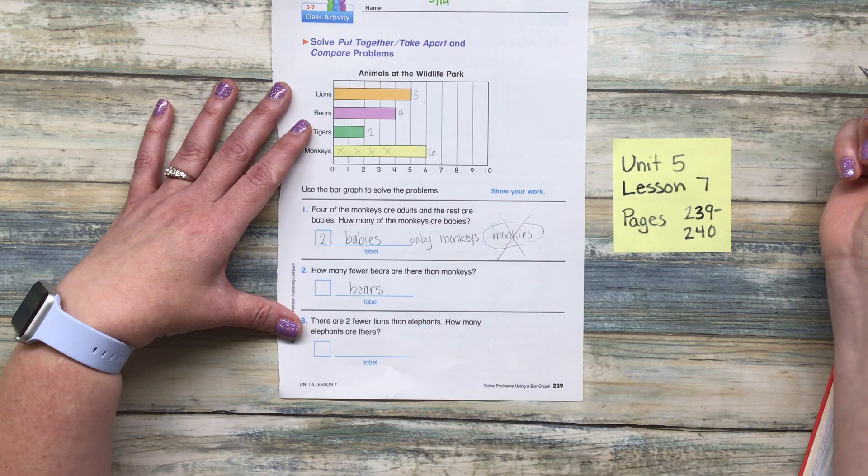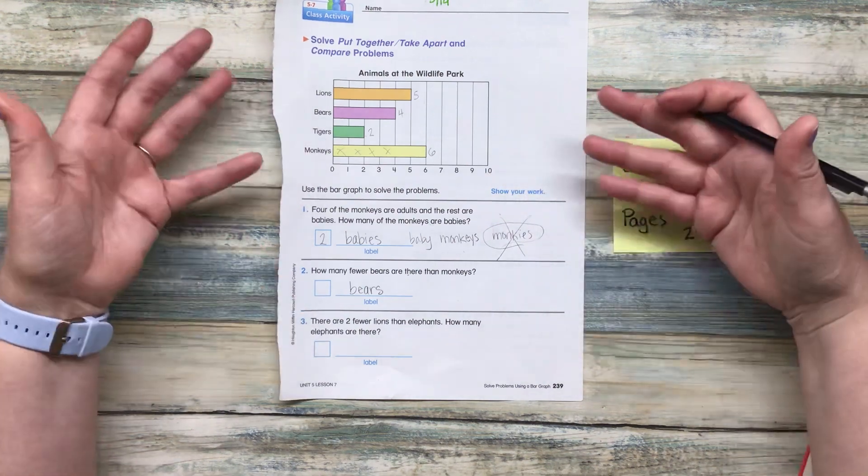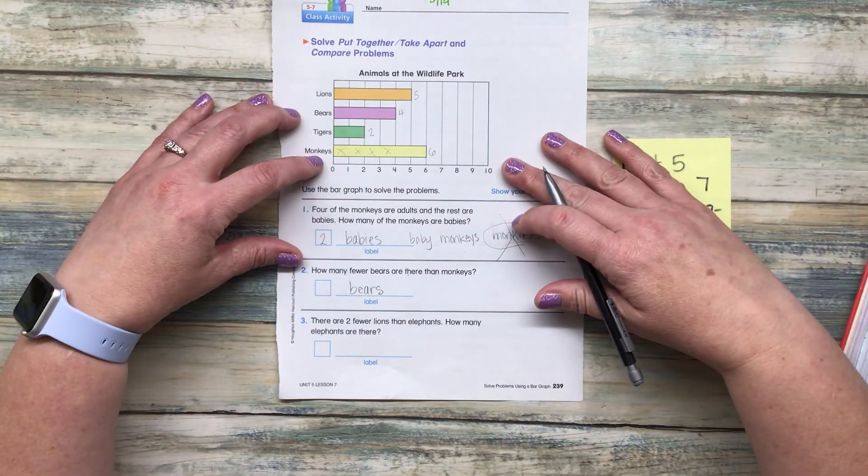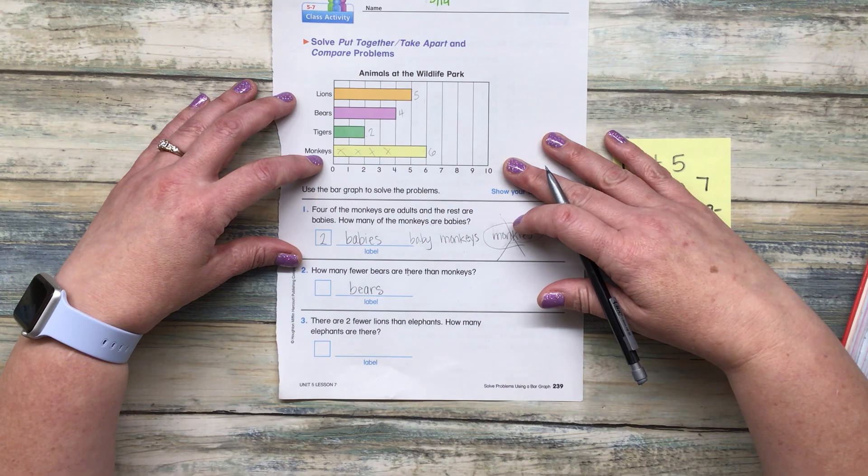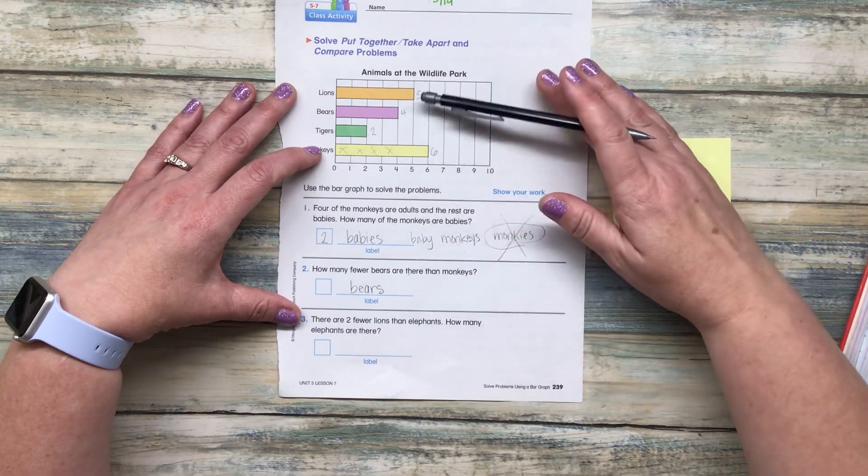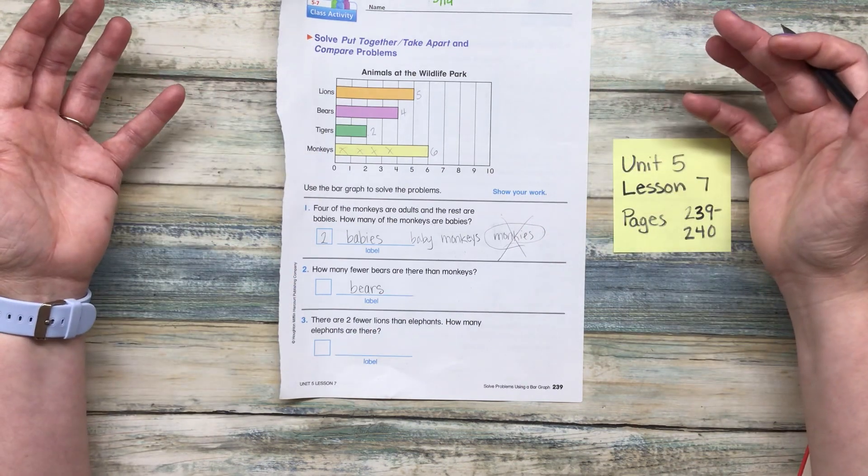There are two fewer lions than elephants. But wait, elephants aren't up here. So we're just going to have to figure out how many elephants there are. So there are two fewer lions than elephants. What are we going to add to lions to figure out how many elephants there are?